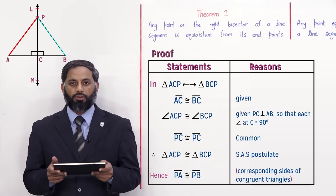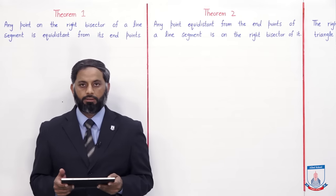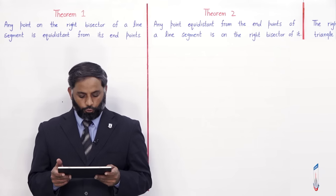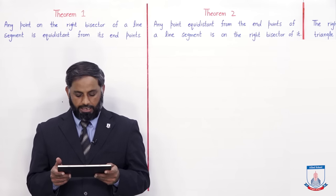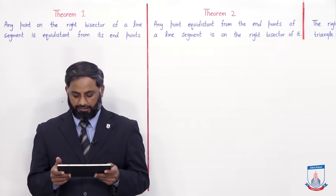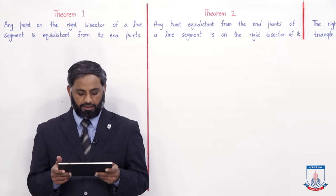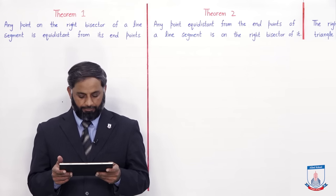So students, we have proved Theorem 1. Now we will prove Theorem 2. Theorem 2 statement: Any point equidistant from the end points of a line segment is on the right bisector of it. This theorem is exactly the converse of Theorem 1.